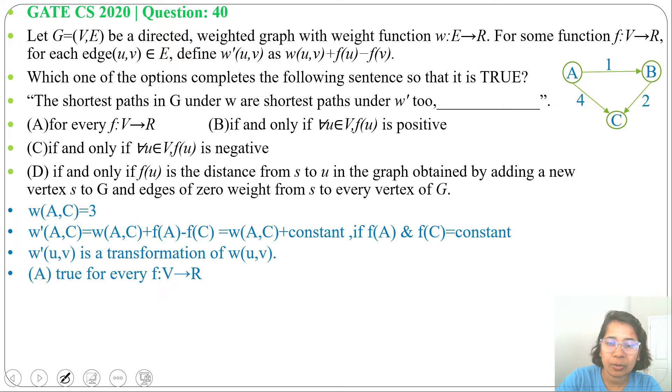Next, option B: if and only if for all U belongs to V, F(U) is positive. Whether F(U) is positive or negative, it will not affect. So option B and option C are wrong.